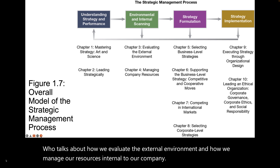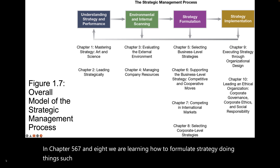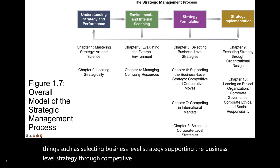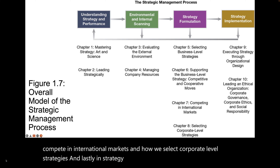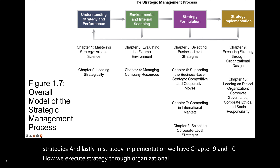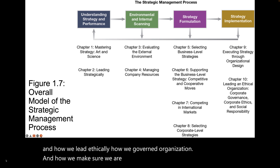In chapters five, six, seven, and eight, we learn how to formulate strategy — selecting business level strategy, supporting it through competitive and cooperative moves, how we compete in international markets, and how we select corporate level strategies. And lastly, in strategy implementation, chapters nine and ten cover how we execute strategy through organizational design and structure, how we lead ethically, how we govern the organization, and how we ensure we are socially responsible towards our stakeholders.